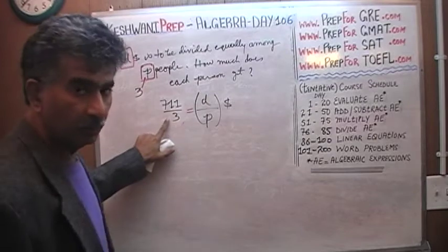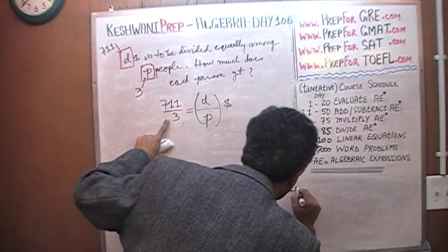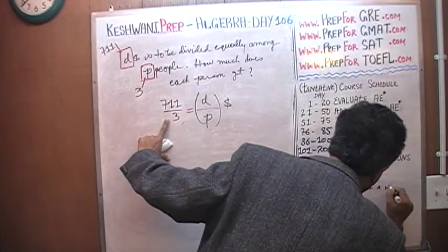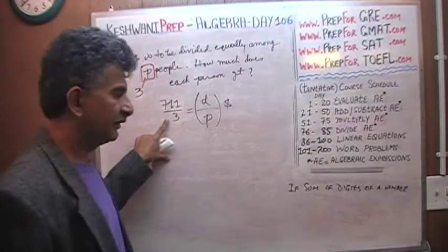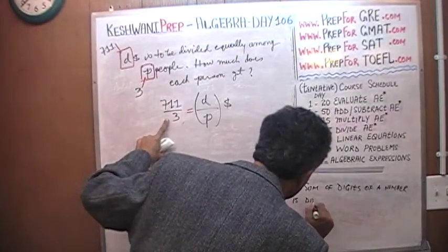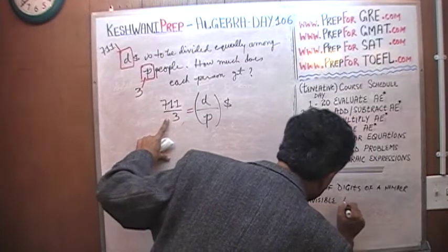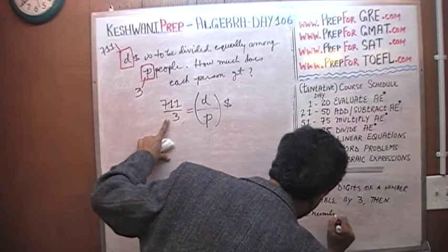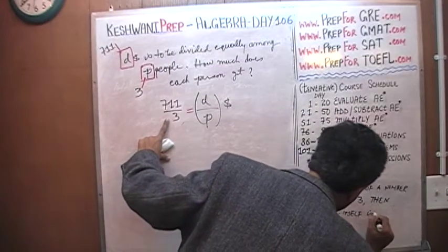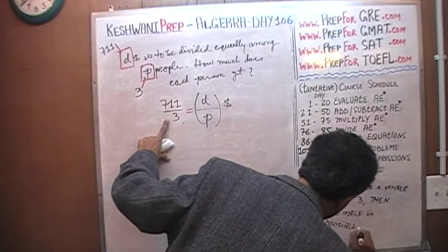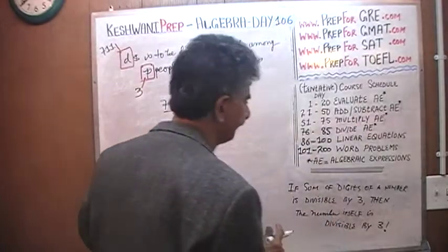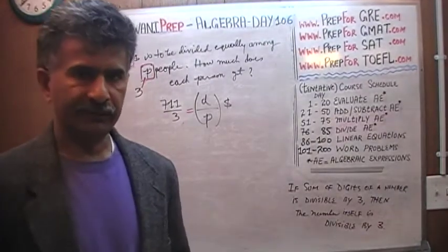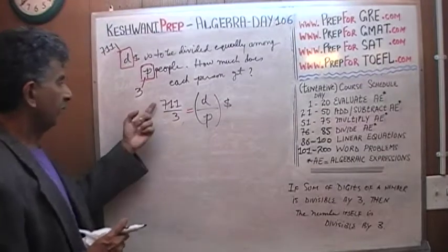By the rule that we learned a long time ago, which is: if the sum of the digits of a number is divisible by 3, then the number itself is divisible by 3. That's an exclamation mark. That's it. That's the rule. If the sum of the digits is divisible by 3, the number itself is divisible by 3. Is 711 evenly divisible by 3?